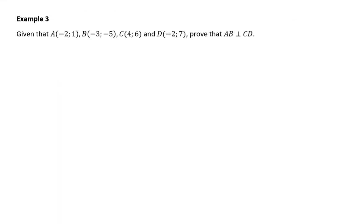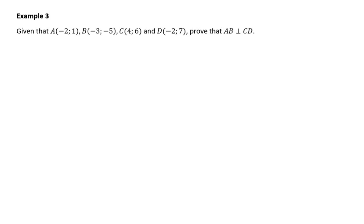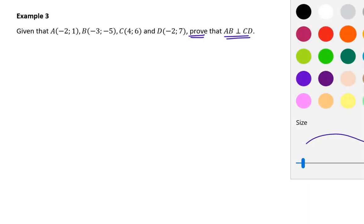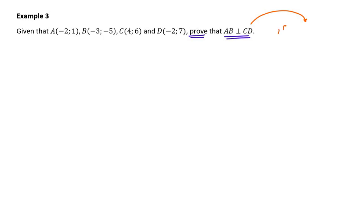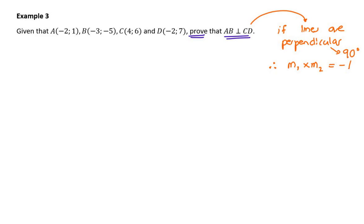On to Example 3. If A, B, C, and D are given to you, prove that the lines are perpendicular. Here's our second important note about gradients: if lines are perpendicular — meaning they're at 90 degrees to each other — then the gradient of one times the gradient of the other always gives you negative one. So if lines are perpendicular, the gradients multiply together to give negative one. We need to show that the gradient of AB times the gradient of CD equals negative one.